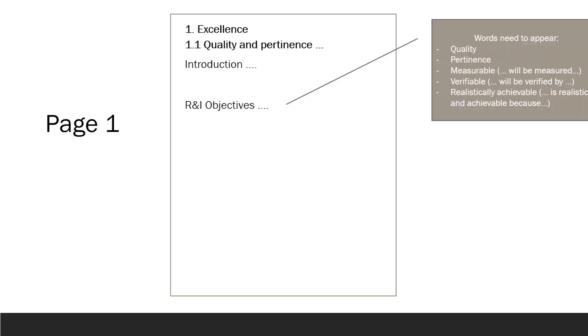In the objectives section, you need to discuss the quality and pertinence of the objectives. Why are these objectives crucial at this point in history? These objectives should be SMART: specific, measurable, achievable, realistic, and time-bound as much as possible.